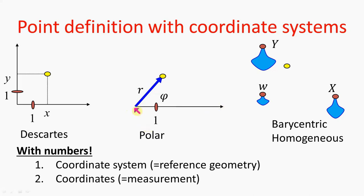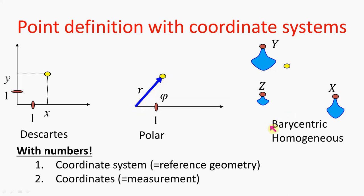In the polar coordinate system, the geometric reference system is just a half line. We measure two things: the direction in which we should leave the end of the half line called the origin, and the distance that should be traveled in order to reach the point from the origin.